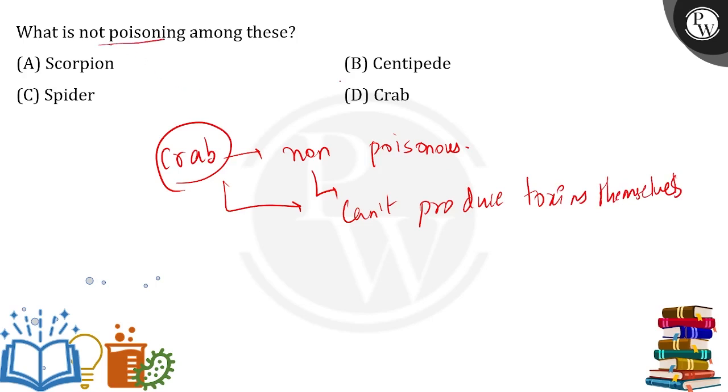But although not all crabs are non-poisonous, some can even produce poison. But if we compare it to all other options like scorpion, spider and centipede, they all are poisonous.